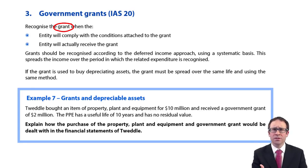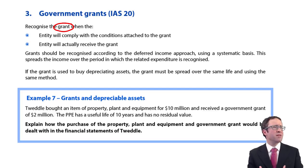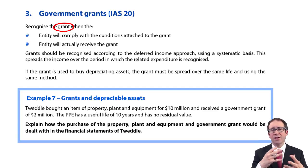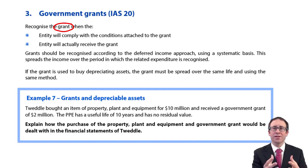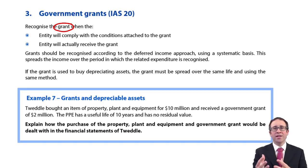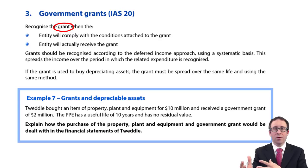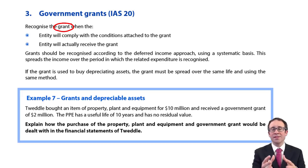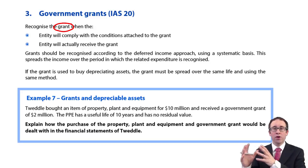There is also government assistance within the standard — you may have received help with technical advice from a government body. If that's the case, government assistance is disclosed. There's nothing to physically account for if you're being given advice; it's just giving you ideas on how you can improve your business, generate better income or better financing. It helps the business, but there's no monetary amount to it. You need comparability with other entities, so that assistance needs to be disclosed, because you may have had it and therefore performed better than another entity that did not.